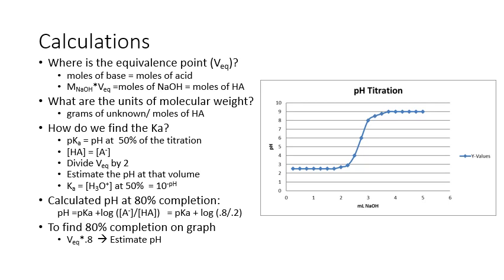There are calculations you need to do for this lab. First, figure out where your equivalence point is—that's the middle of the steepest portion of the curve—and estimate the volume of sodium hydroxide at that point. At the equivalence point, moles of base equal moles of acid. You can calculate moles of sodium hydroxide from the molarity and volume added, which equals the moles of your monoprotic unknown acid.